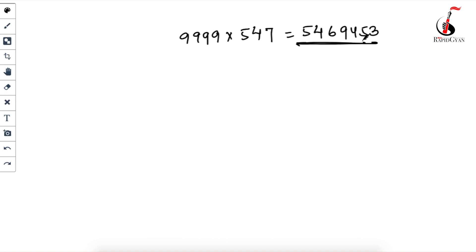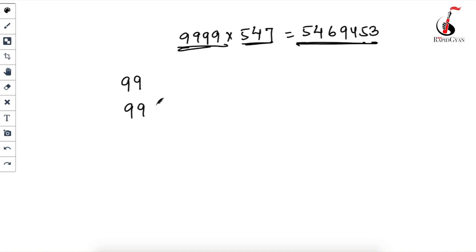I'm going to tell you a fantastic trick by which you can multiply any two numbers within five seconds. The only condition is that one of the two numbers must have all digits as 9 — for example, 99, 999, or 9999. For those kinds of numbers, you'll get the answer in five seconds.